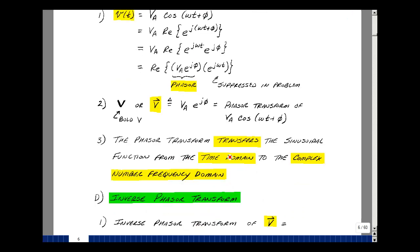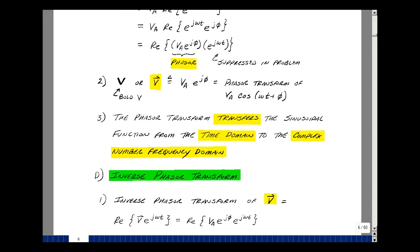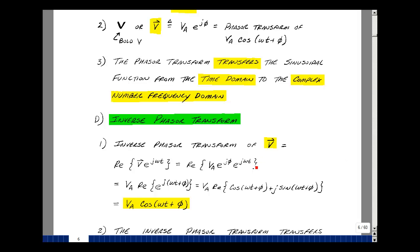And again, the phasor transform transforms the sinusoidal function from the time domain to the complex number frequency domain. Now, we're going to learn how to do the manipulations of these phasors. Then we're going to want to come back into the time domain. This is called the inverse phasor transform. So we'll get a result in voltage or current. Here, I'll do voltage.